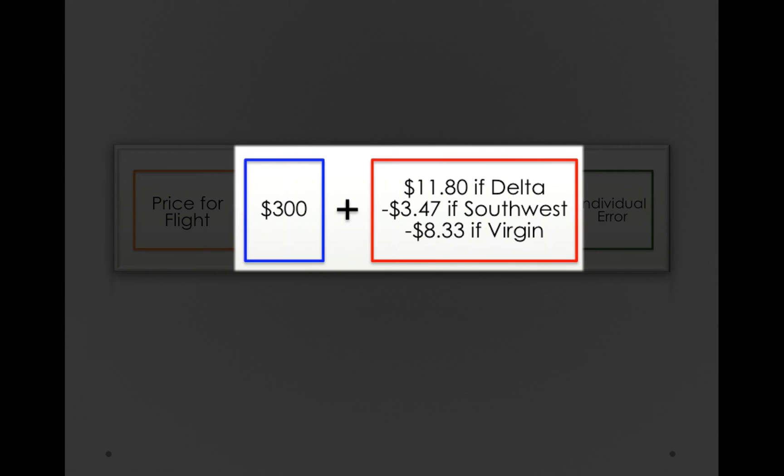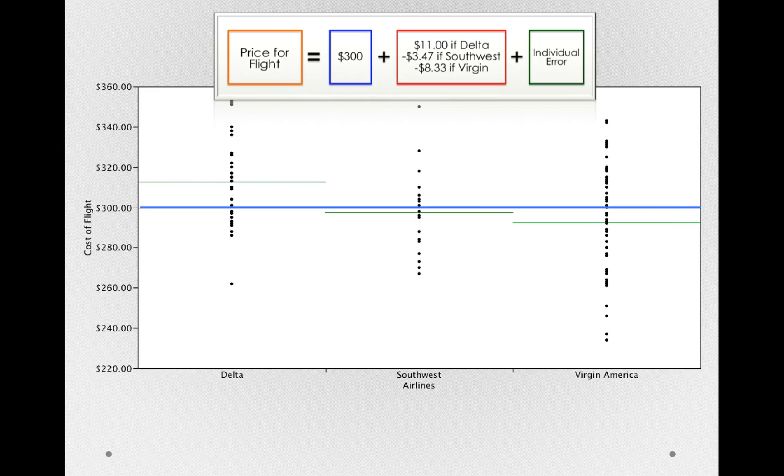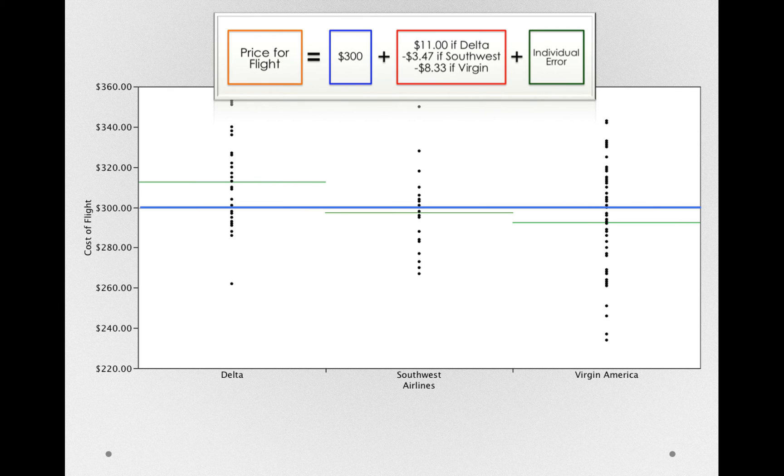In actually calculating these, it's as simple as just finding the mean for each group and the difference to the overall average. But let's look at these offsets on our actual plot. For Delta, we can see Delta is $11 over the average, Southwest $3.40 less than the average, and Virgin a little over $8.33 less than the average. We've just described the differences between the groups and the overall grand mean.